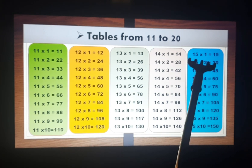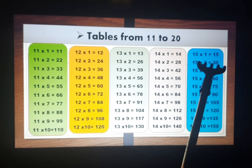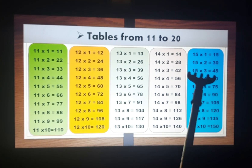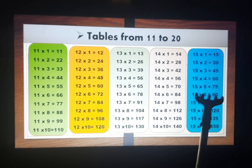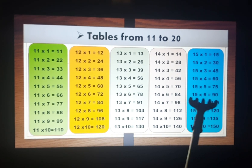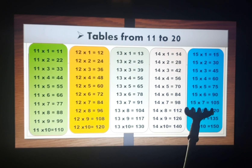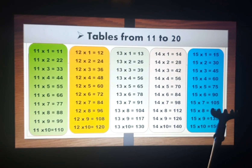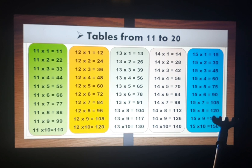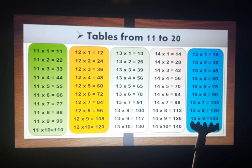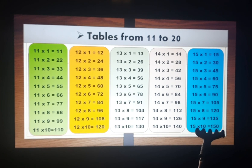Fifteen ones are fifteen, fifteen twos are thirty, fifteen threes are forty-five, fifteen fours are sixty, fifteen fives are seventy-five, fifteen sixes are ninety, fifteen sevens are one hundred five, fifteen eights are one hundred twenty, fifteen nines are one hundred thirty-five, and fifteen tens are one hundred fifty.